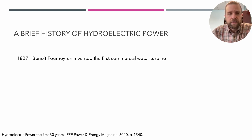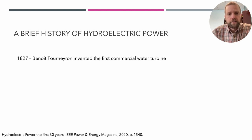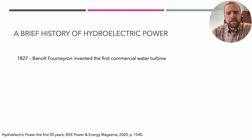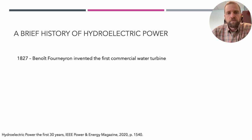Hydropower was really revolutionized in the early 1800s by Benoît Fourneyron, who invented the first commercial water turbine in 1827. This is where hydropower truly changed, and we'll talk about why when we look at his turbine design.